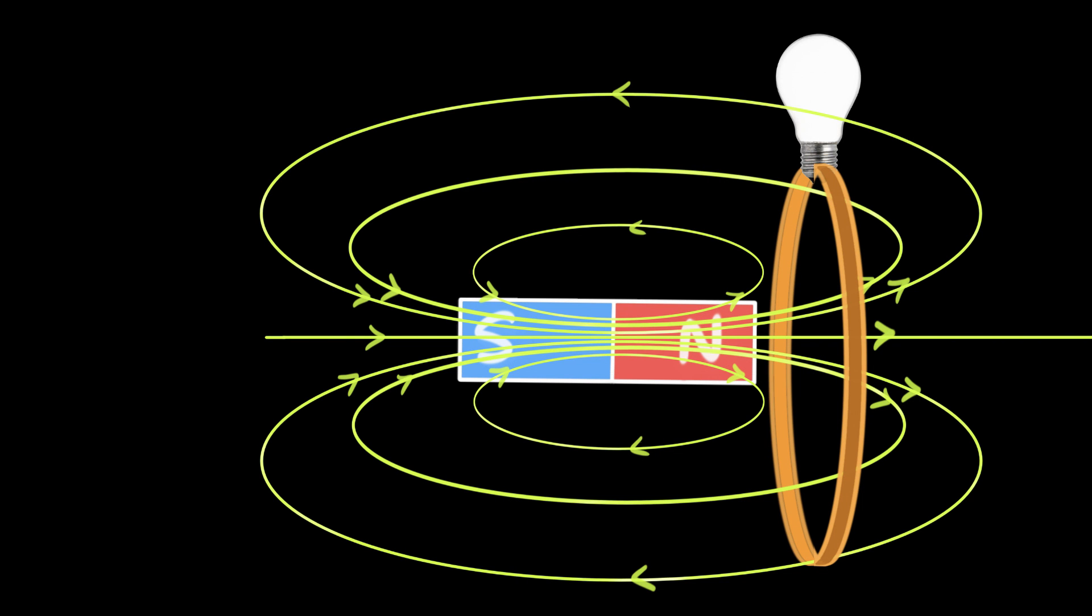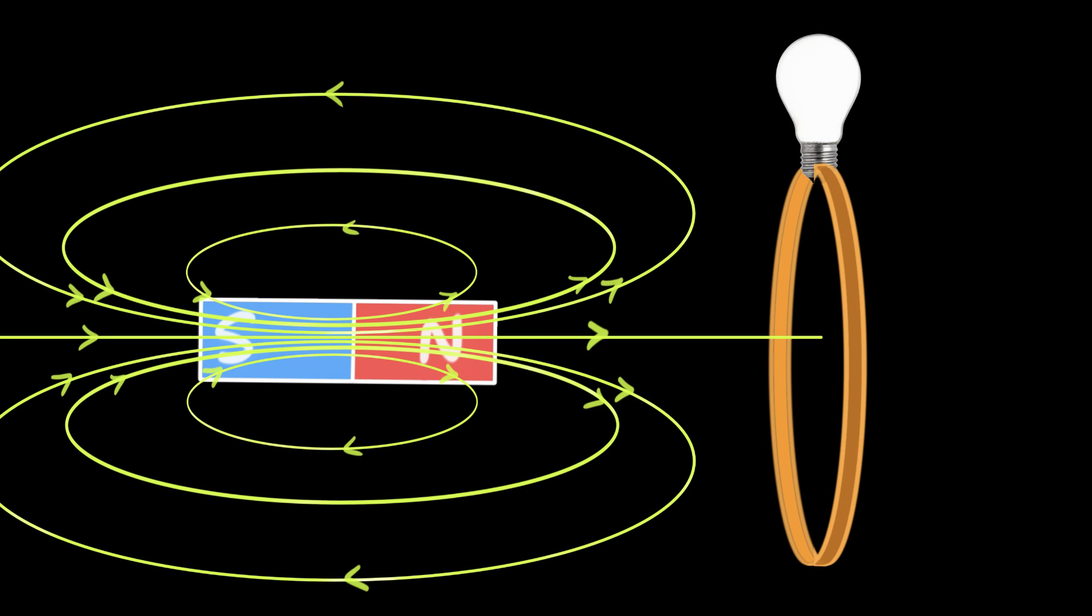In a previous video, we've seen that a changing magnetic field can induce an electric current.